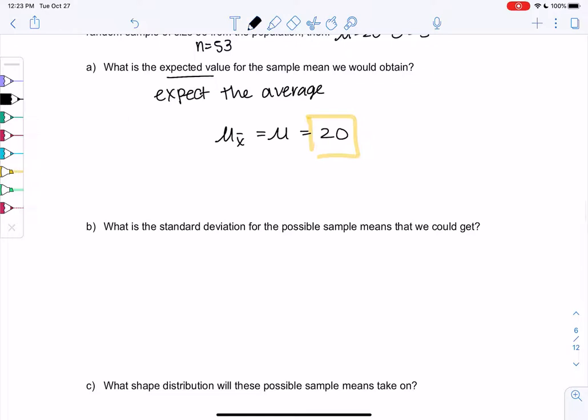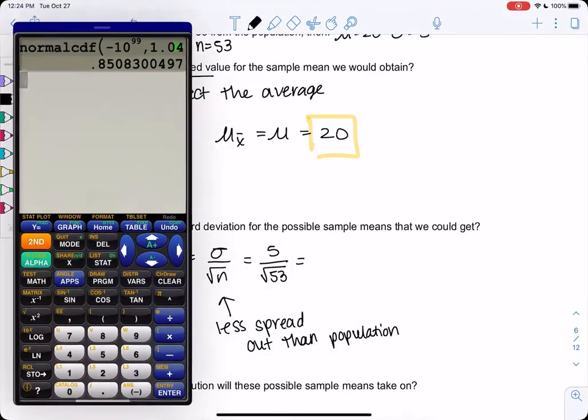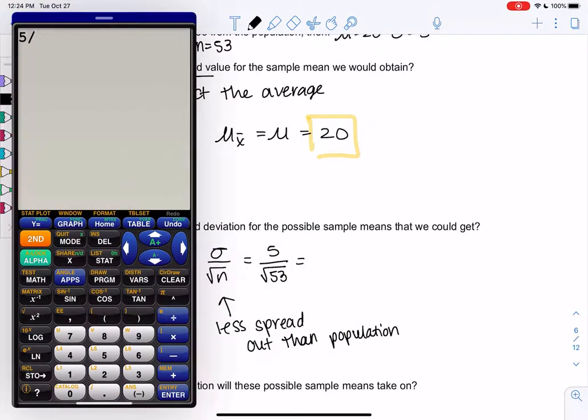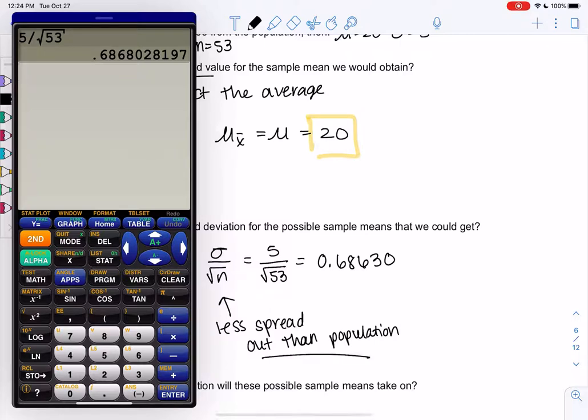What's the standard deviation of the sample means? So it's no longer the same. It's less spread out. So sigma of x-bar is sigma over square root n. It'll be less spread out than the population. The means should be closer to the middle. The outliers kind of get hidden a little bit more. So we're going to take our standard deviation of 5 and divide by square root of 53. And remember, we like 5 digits. And I get 0.68680.